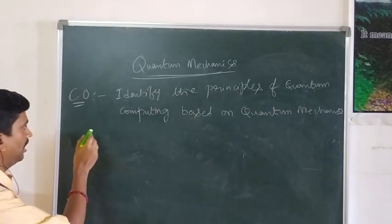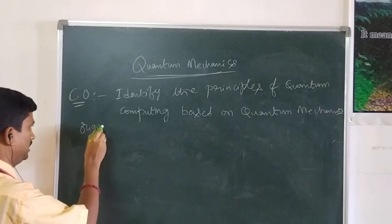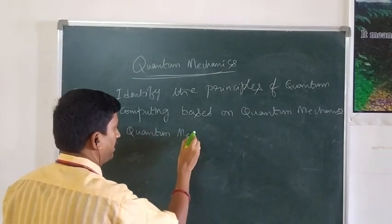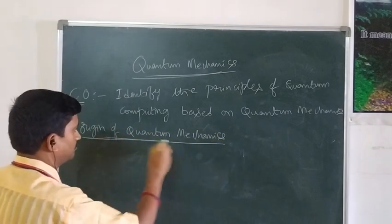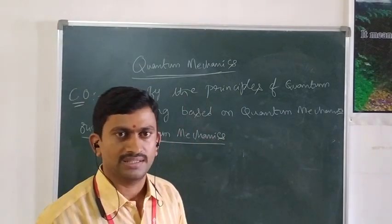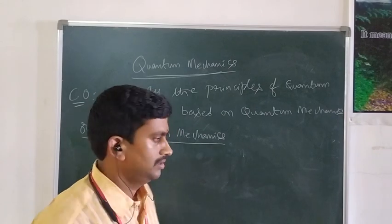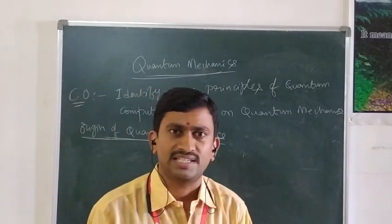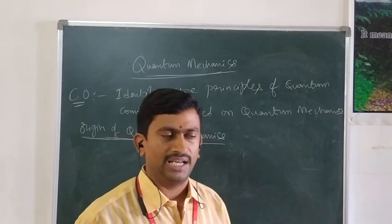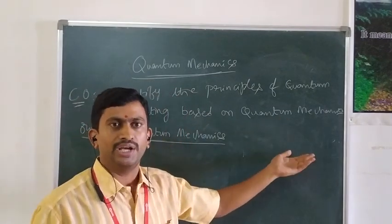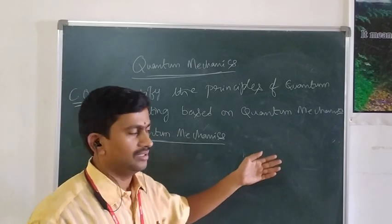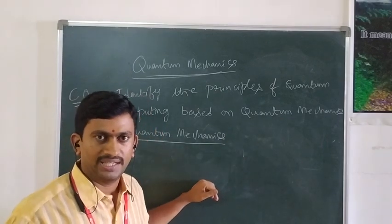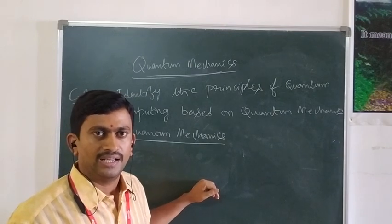What is the origin of Quantum Mechanics? The origin of Quantum Mechanics is, in other words, the same as the failures of classical Mechanics. Where classical Mechanics actually failed — in the year 1960 onwards, Maxwell's Electromagnetic Theory was generally used to explain any new discovery or experimental invention. The classical Electromagnetic Theory had been successfully applied in all theories.